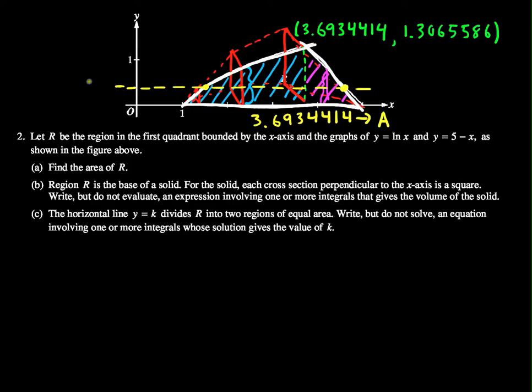So, this is the line y equals k, and we can find this value here by solving the equation, the natural log of x equals k, which of course gives me that this x value here is e to the k. Take e to both sides to get rid of natural log.